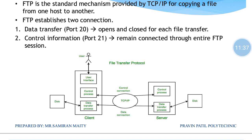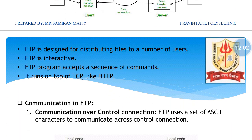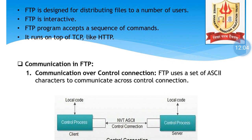In the FTP diagram, the user has an interface connected to data transfer and control processes. On both the client and server sides, we have data transfer and control. Data connection is managed by the data transfer process, and control connection is managed by the control process. Each side is also connected to disk storage for actual or passive data.